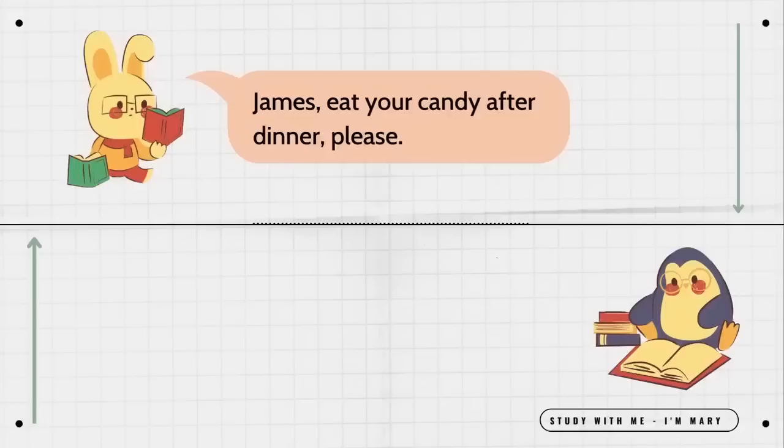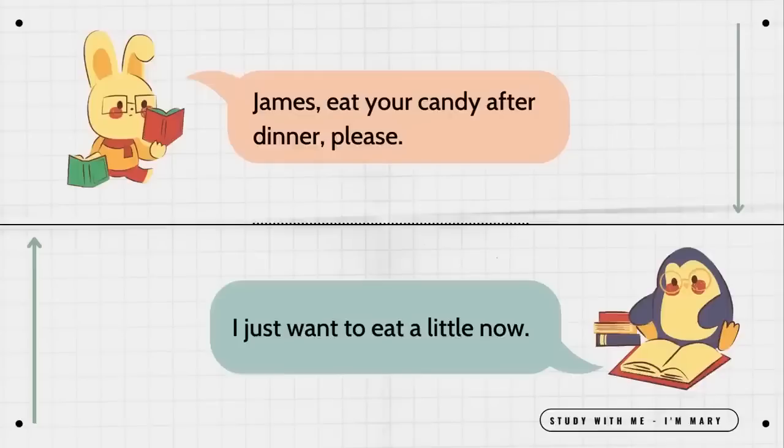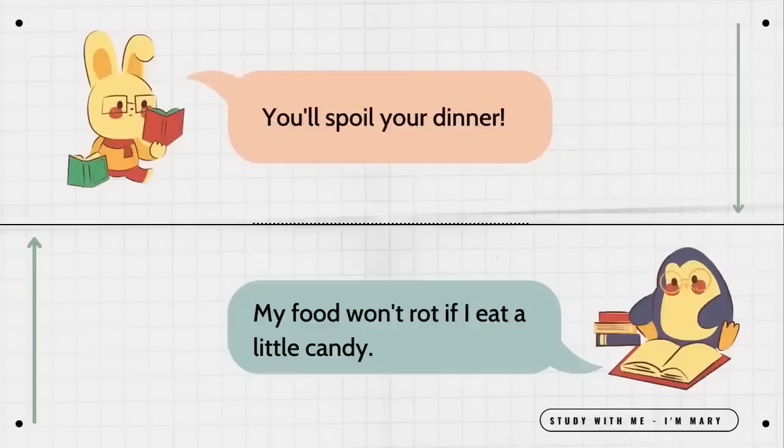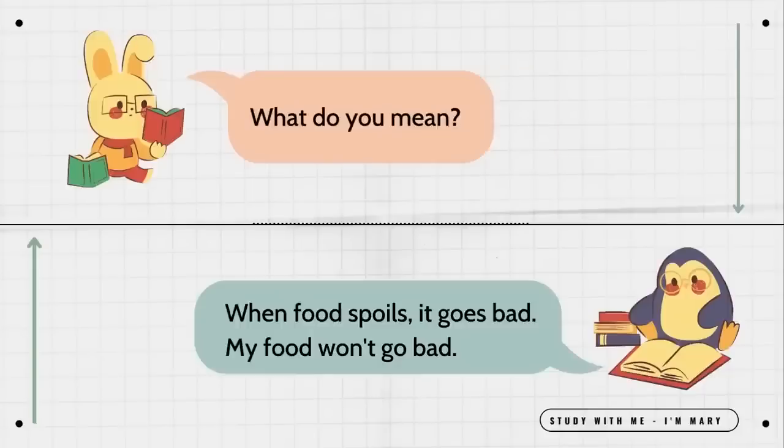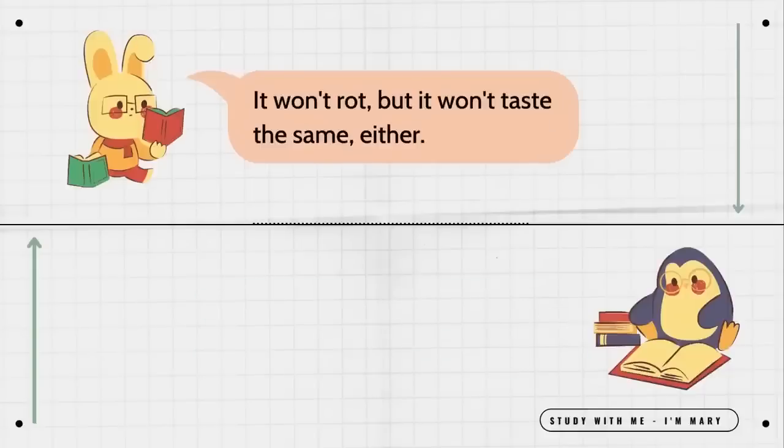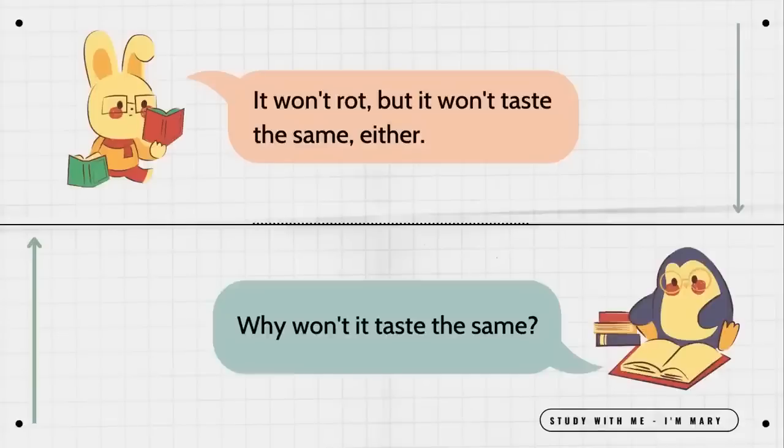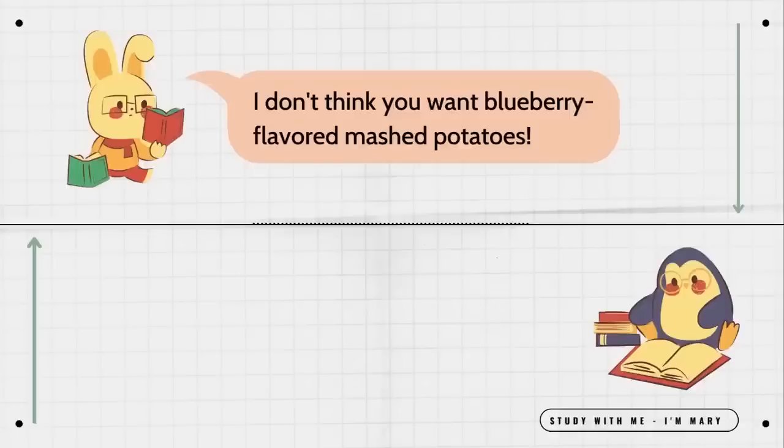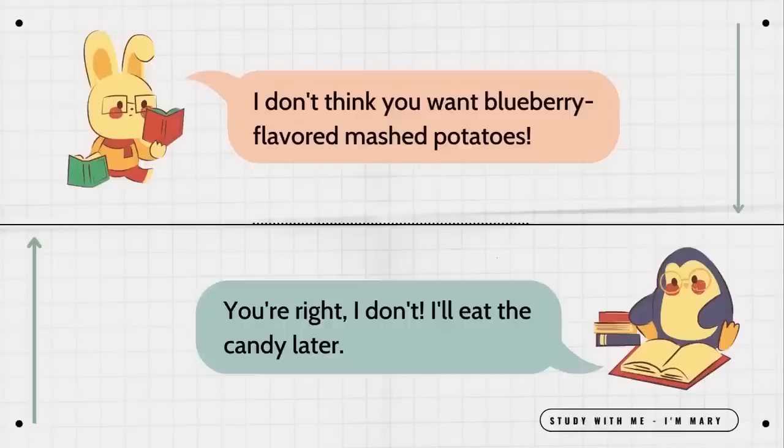Eat your candy after dinner please. I just want to eat a little now. You'll spoil your dinner. My food won't rot if I eat a little candy. What do you mean? When food spoils, it goes bad. My food won't go bad. It won't rot, but it won't taste the same either. Why won't it taste the same? Well, if you eat the candy now, it will stay in your mouth. I guess so. Why is that bad? I don't think you want blueberry-flavored mashed potatoes. You're right. I don't. I'll eat the candy later.